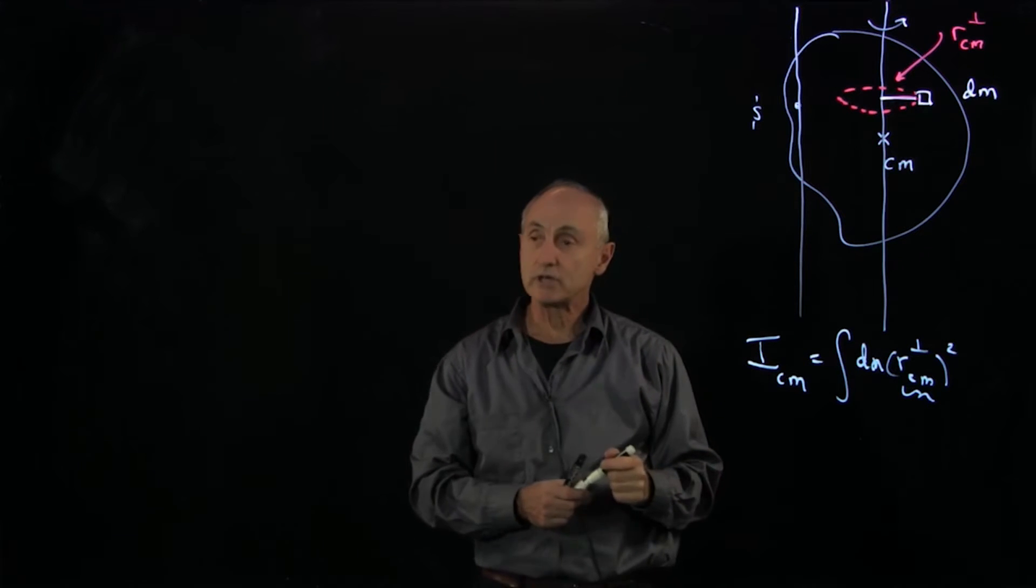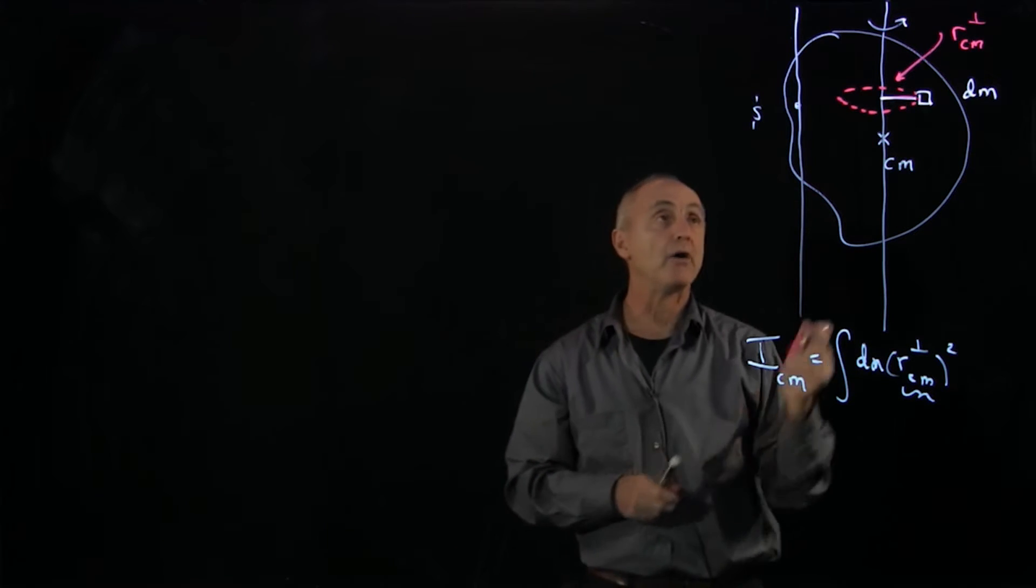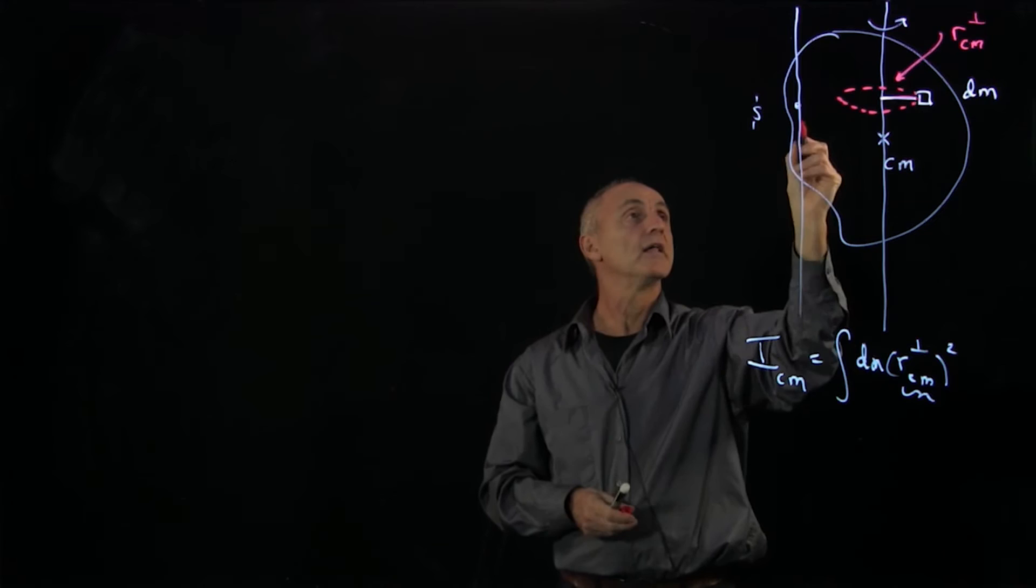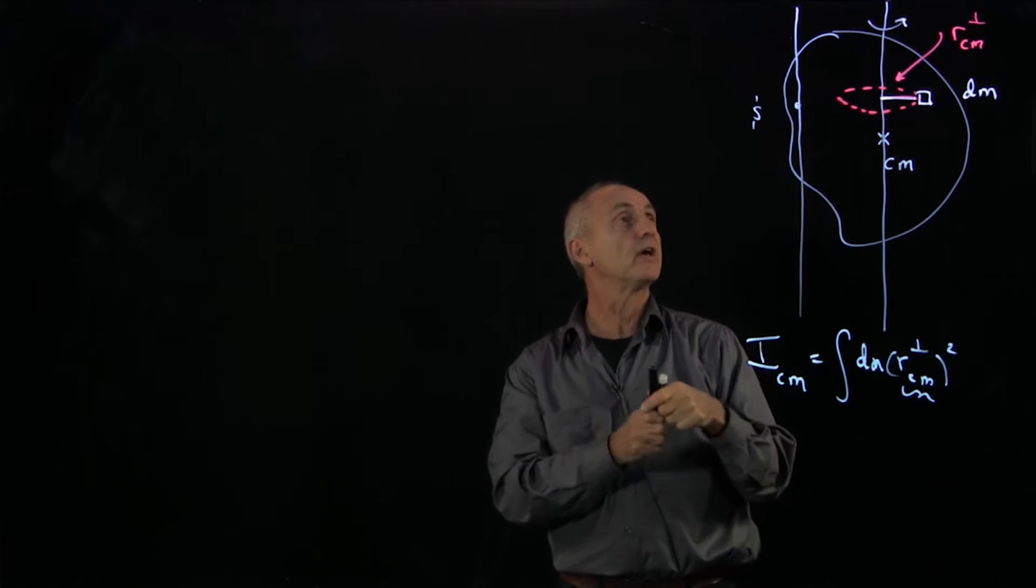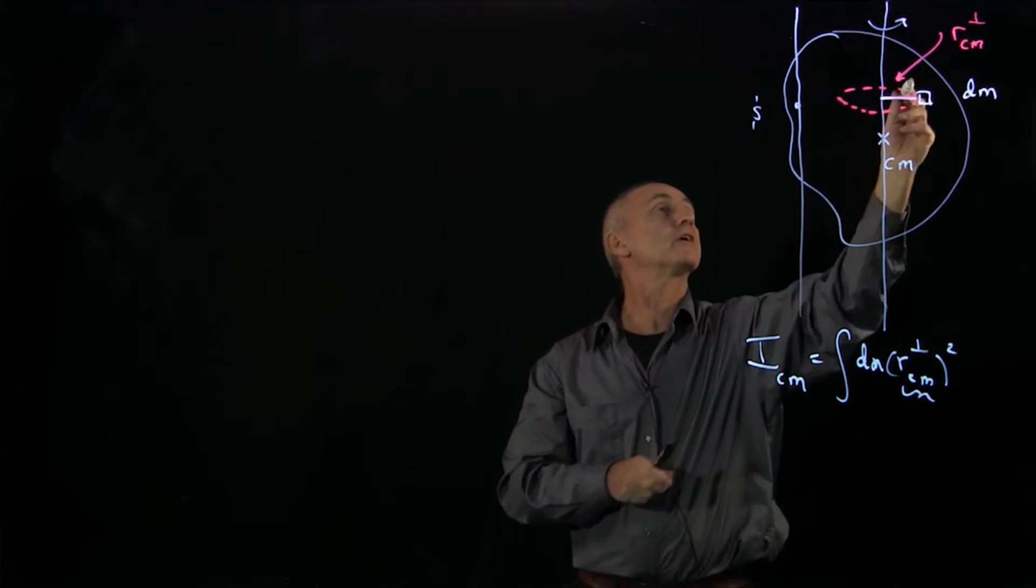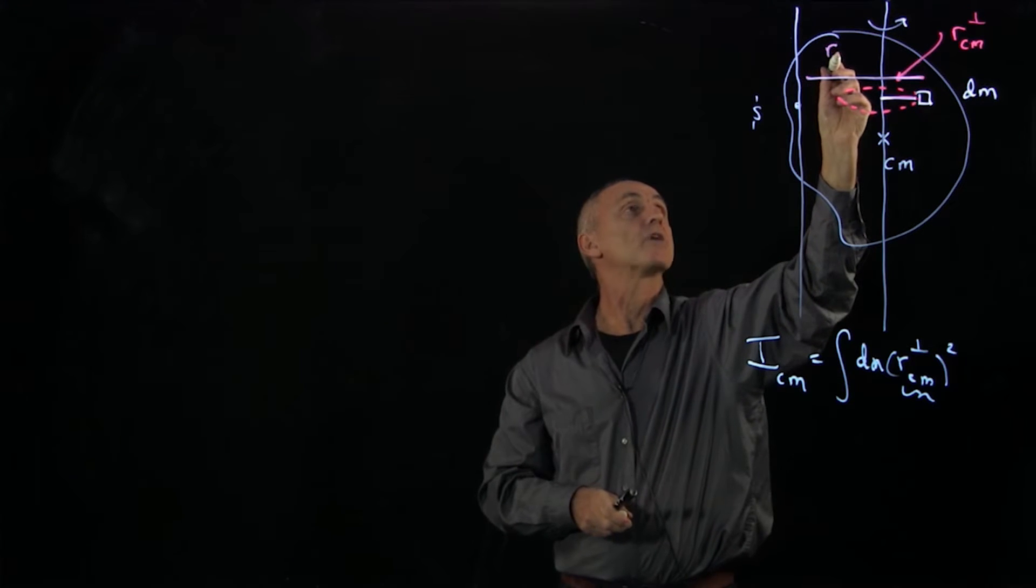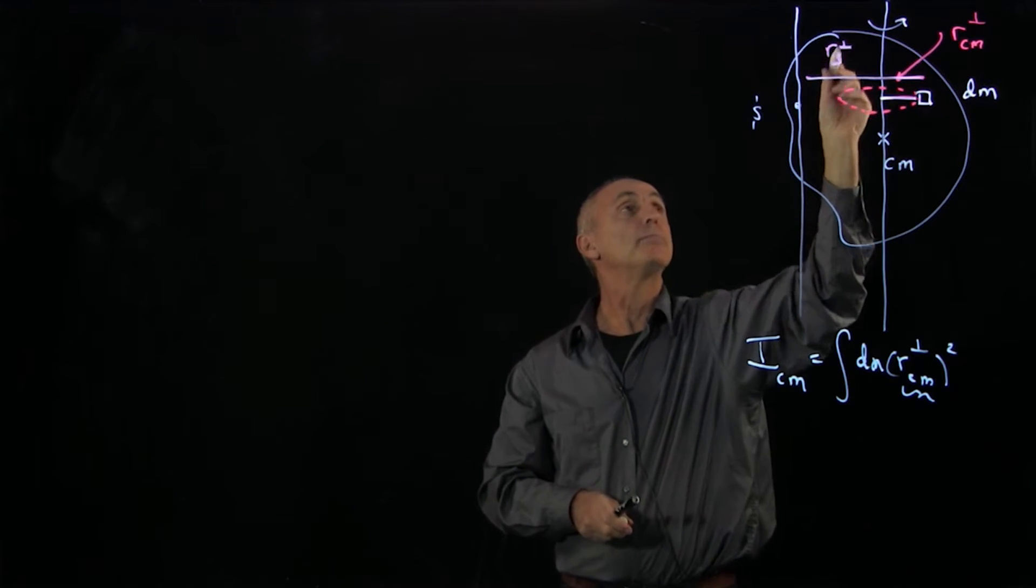So if we were to calculate the moment of inertia about another axis, then about this axis, the perpendicular distance here, that I'll write as r_s_perp.